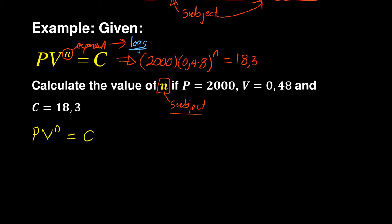So how do I introduce logs? I just put log on both sides. On my left hand side I will say log PV^n is equal to log C. Now you can notice that I didn't put any base, and the assumption is that if you don't put any base you are working with base 10. Even your calculator assumes whatever you are entering is in base 10.